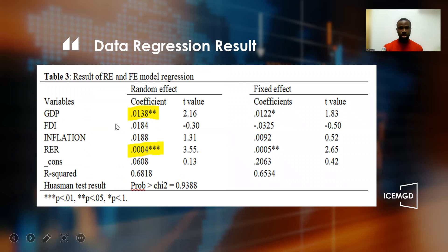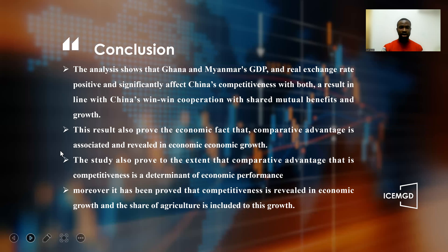From the data regression results, we also found that GDP and real exchange rate of these countries affect China's agricultural competitiveness with them. The significance level was at 1%, which was used in our study. The analysis shows that Ghana and Myanmar's GDP and real exchange rate have a positive and significant effect on China's competitiveness with them.